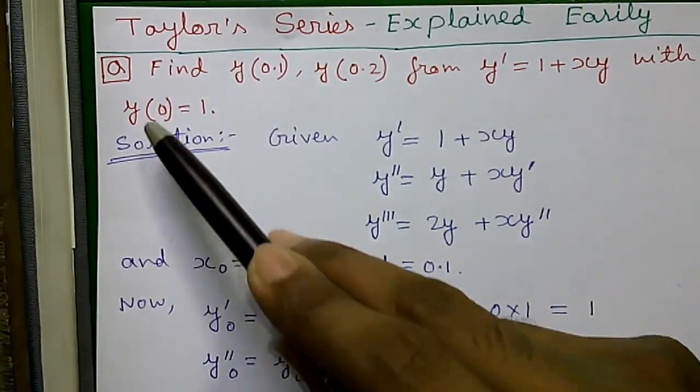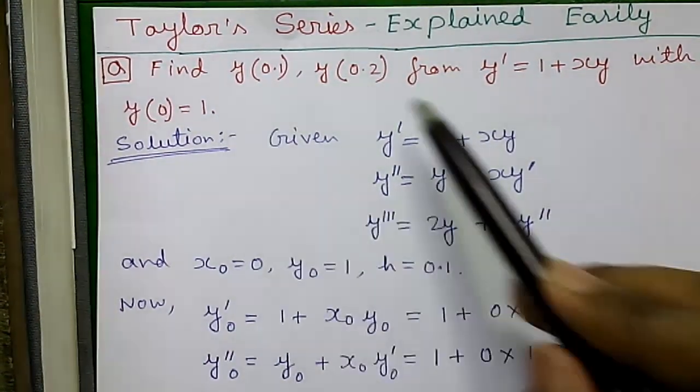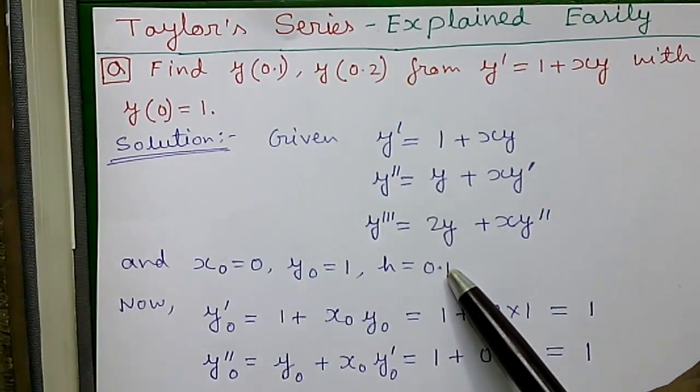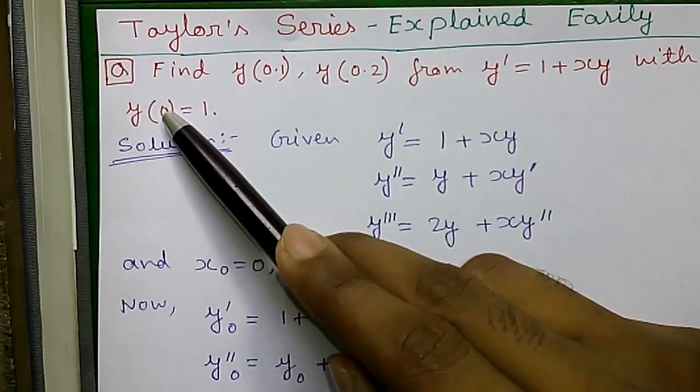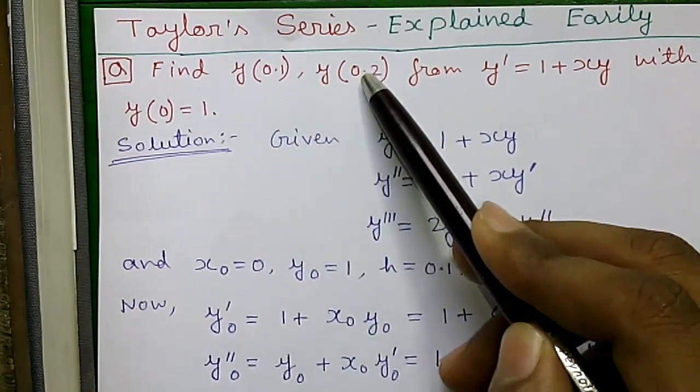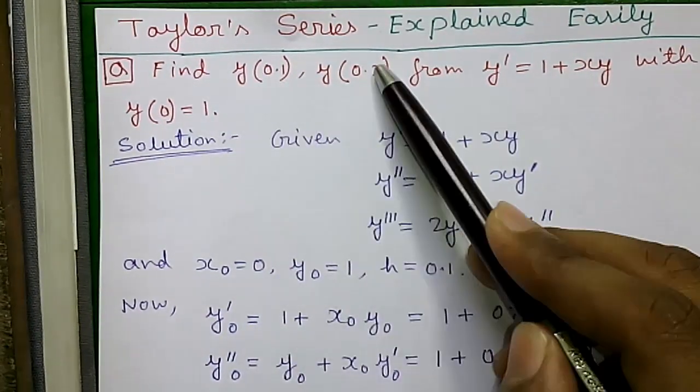x0 = 0 from here and y0 = 1 from here and h = 0.1. h is the increment in x value. First x value is 0, next 0.1, next 0.2, that is increment this by 0.1.